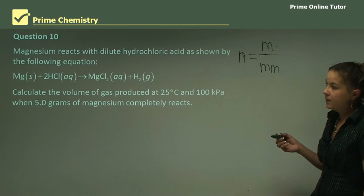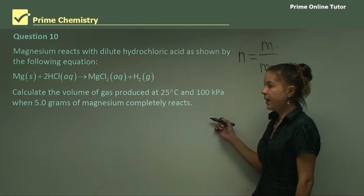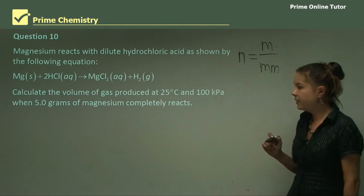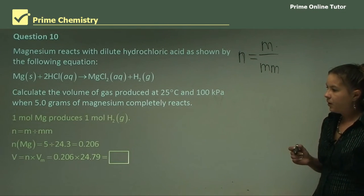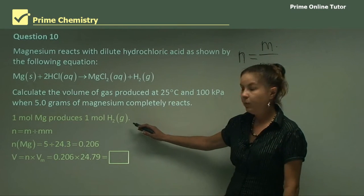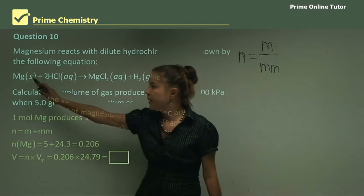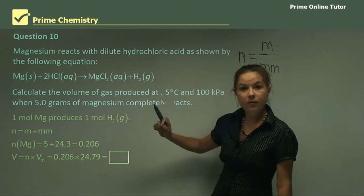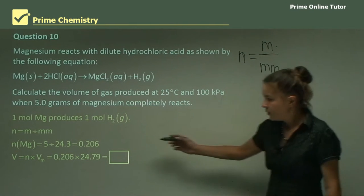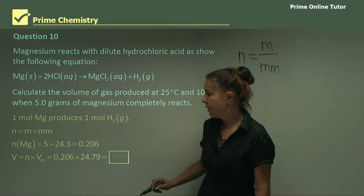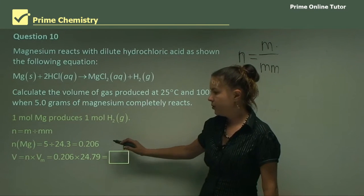Question 10. Magnesium reacts with dilute hydrochloric acid, as shown by the following equation. Calculate the volume of gas produced at 25 degrees and 100 kilopascals when 5 grams of magnesium completely reacts. So off we go. One mole of magnesium will produce one mole of hydrogen gas. So this is similar to the last question. It's a 1 to 1 molar ratio. So magnesium has one and there's only one of the hydrogen gas. Now, using our molar equation, the moles of magnesium will be the mass divided by 24.3, which is the molecular mass of magnesium. And we get 0.206 moles.